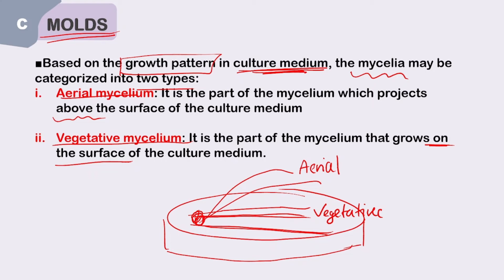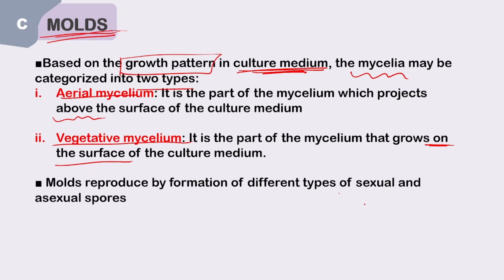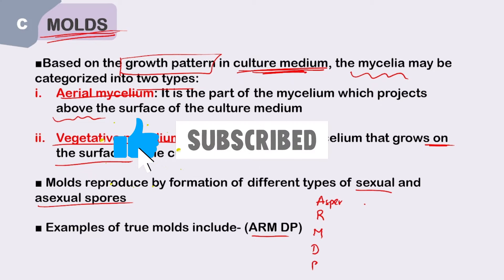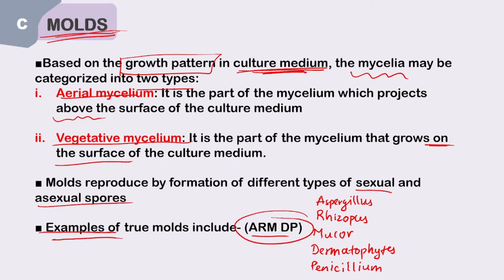Molds can reproduce by both sexual and asexual spores. Examples of molds can be remembered with the mnemonic ARMDP: A for Aspergillus, R for Rhizopus, M for Mucor, D for Dermatophytes, and P for Penicillium.